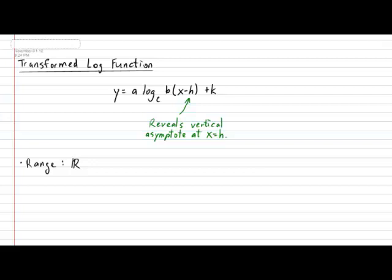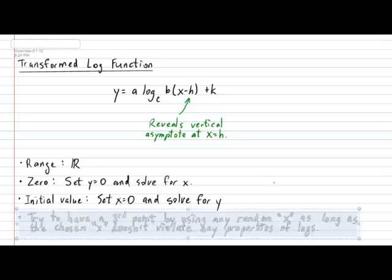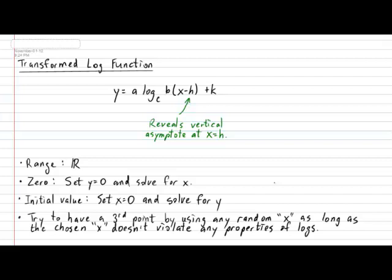As with any other function, to determine the zeros of a log function, all we have to do is set the value of y to zero and solve for x. Also, as with any other function, to determine the initial value of a log function, all we have to do is set the value of x to zero and solve for y. Finally, in order to draw a fairly decent graph, it is advisable to have at least three points, even four if you have the time to spare, by simply plugging in any random value of x and solving for y. Please keep in mind that you are free to plug in any value for x as long as your chosen value does not violate any properties of logs.